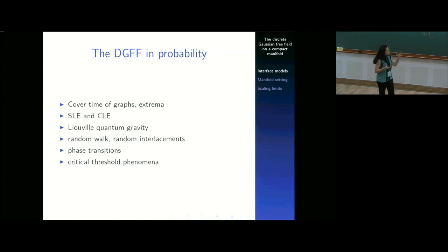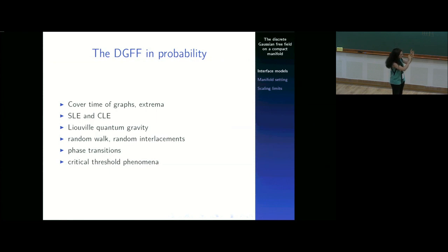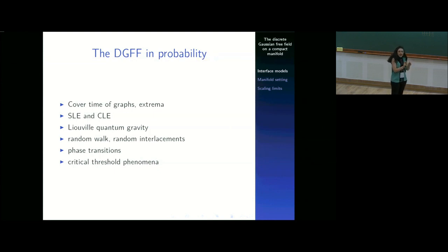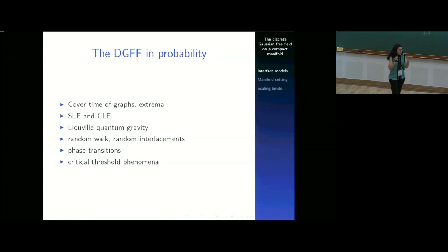Why does one want to study the DGFF, or general interfaces for that matter? The DGFF has a lot of applications, just confined to probability theory — there are many more, of course. So the idea is: I have this object not just on Z^D, I have it in more general settings. Can I try to work with random quantities if I go beyond the Euclidean lattice? The question, especially for those in the audience with a physics background, is whether there are open questions or interesting themes that one can look at in the setting of manifolds.